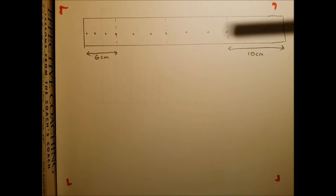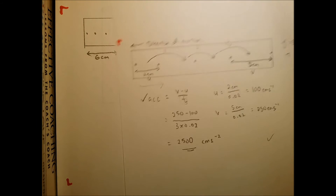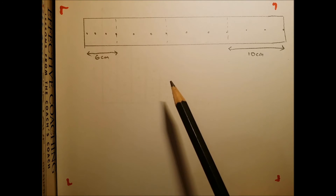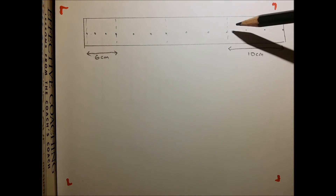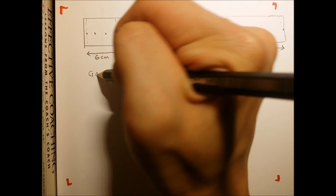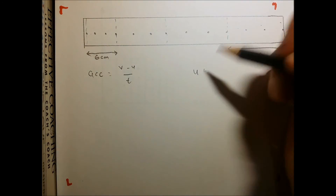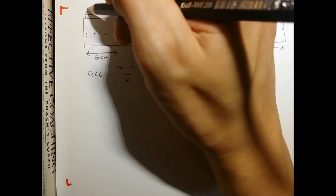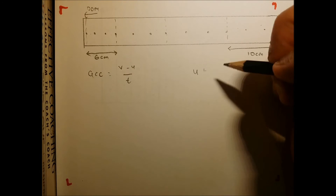In this next question, there is a slight difference compared to the previous one. Previously, it dealt with individual dots. In this case, there are sections. You will see that sections 1, 2, 3 give 6 cm, and the last section is given as 10 cm. As before, you need to find the acceleration — the steps are standard. The initial velocity is 6 cm, corresponding to the first section, and the direction of motion will be given in the question.